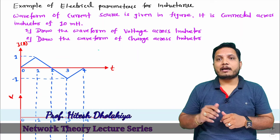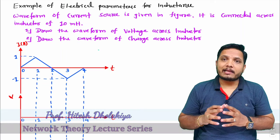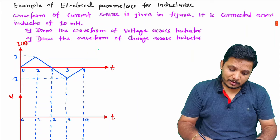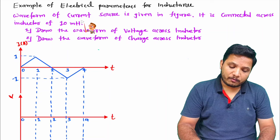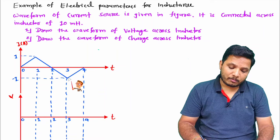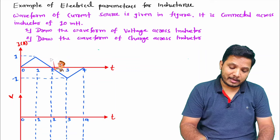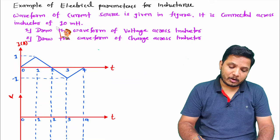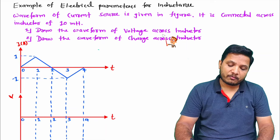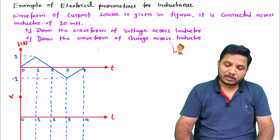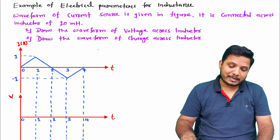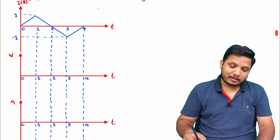Welcome to the network theory lecture series. Professor Itesh Dolakya will explain an interesting example based on electrical parameters for inductance. The question gives a triangular waveform of a current source connected across an inductor of 10 millihenry. We need to draw the waveform of voltage across the inductor and the waveform of charge across the inductor.